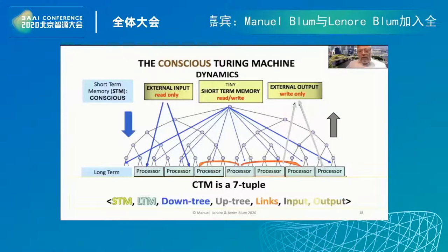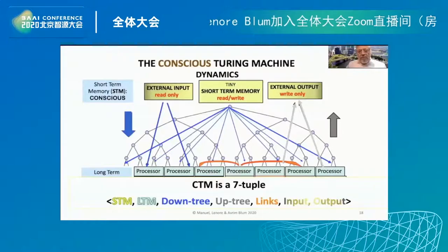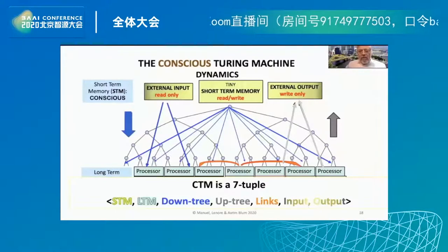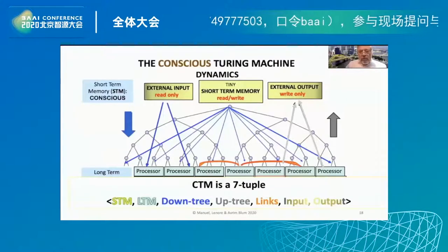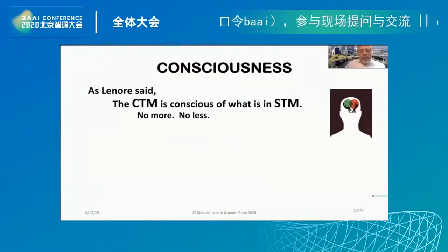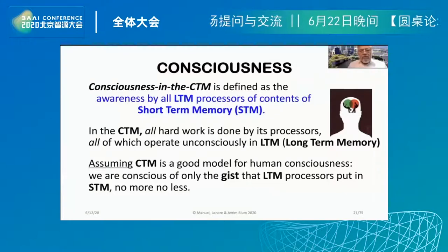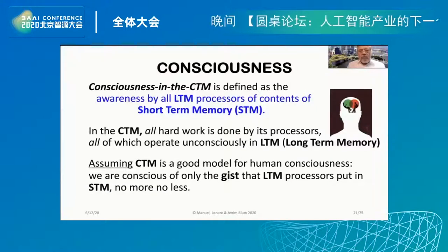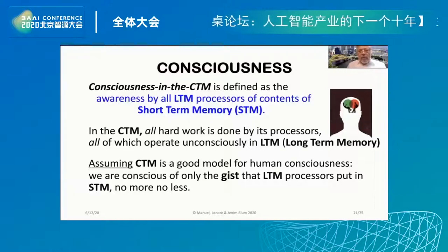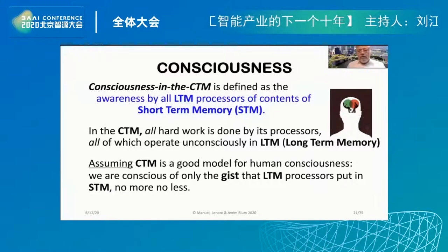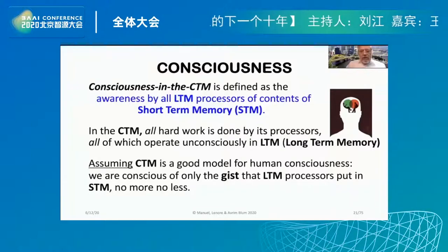There are also links between processors. When the CTM is born, there are no links. But if two processors communicate through short-term memory often enough, a link forms between them. From then on, the two processors can talk to each other without going through short-term memory. That is how conscious activity which goes through short-term memory becomes unconscious. As Lenore said, the CTM is conscious of what is in STM — no more, no less. Consciousness in the CTM is the awareness by all LTM processors of the contents of short-term memory. All hard work is done by processors operating unconsciously in long-term memory.